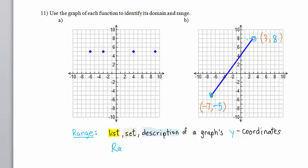So the range is -5 ≤ y < 8. Again, we have a strict inequality right here, because this open circle means this point is not included with the graph of the function.